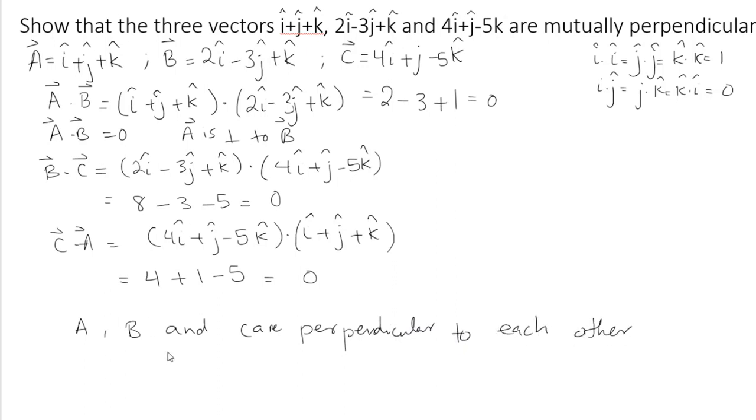I can also find either B·A, either C·B, it doesn't matter because scalar product is commutative, or A·C, they are all 0 too.